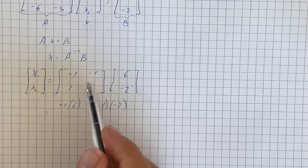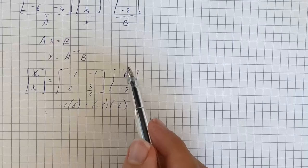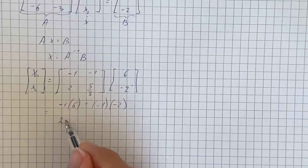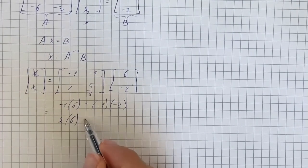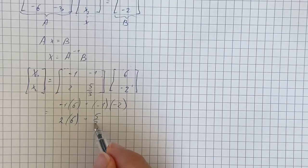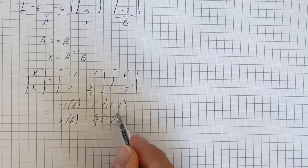And now we're going to take this row and multiply it by the same column. That's going to be 2 times 6, plus 5/3 times -2.